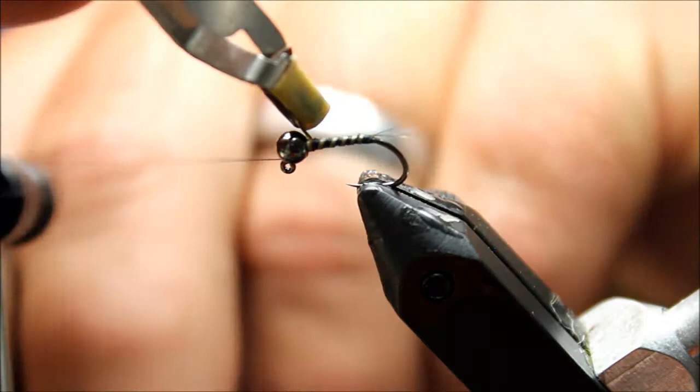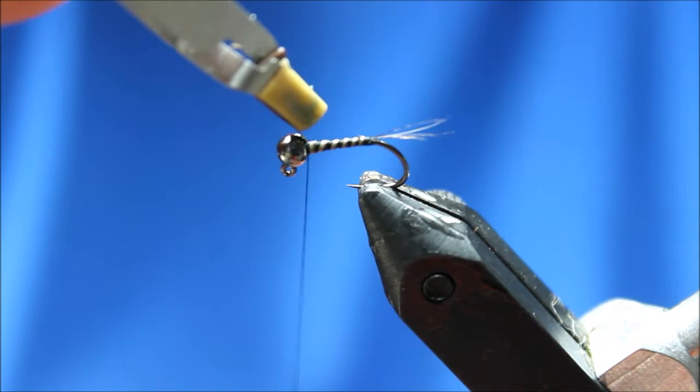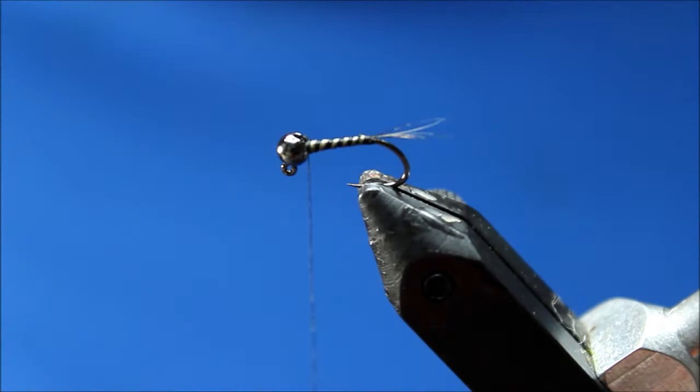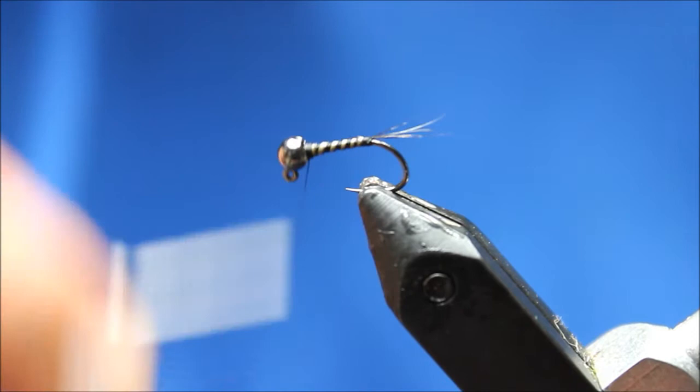We're going to wrap that up and come over and tie that down. If you've got a space like this up close to the bead, don't worry about that because you're going to be adding a dubbed collar to this fly.